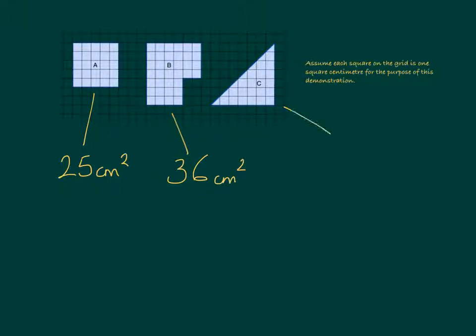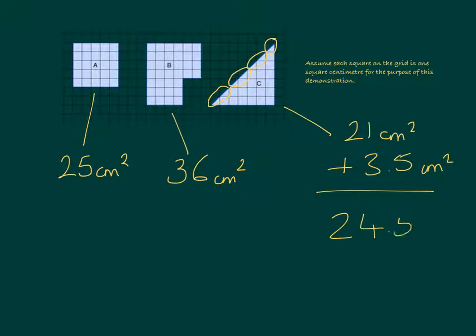A little more complicated for shape C, because we have these half squares along the diagonal line of the triangle. So we'd need to count each individual square that is whole first, which is 21 cm². Then we add each pair of half squares together. One pair, two pairs, three pairs, and another half. So we'd add an additional 3.5 cm² to make a combined total of 24.5 cm² for the area of the triangle.